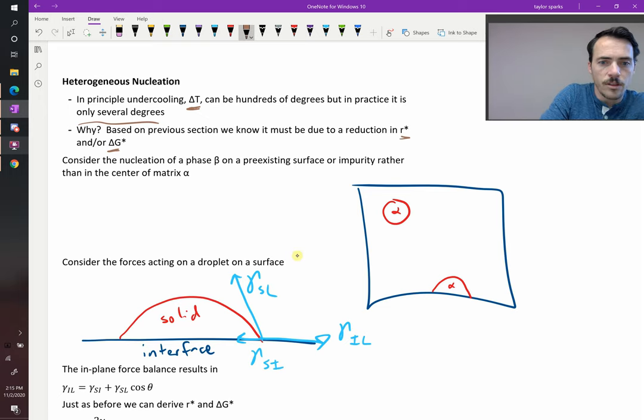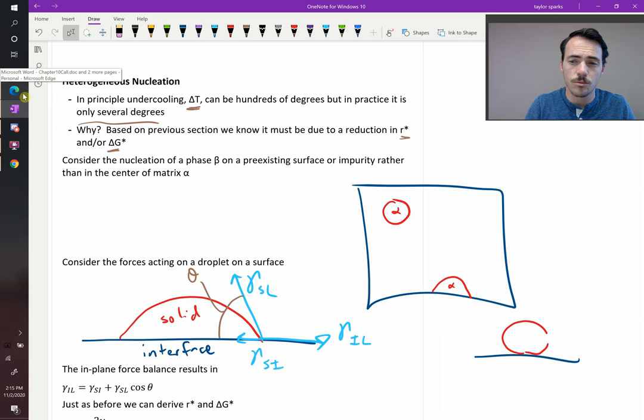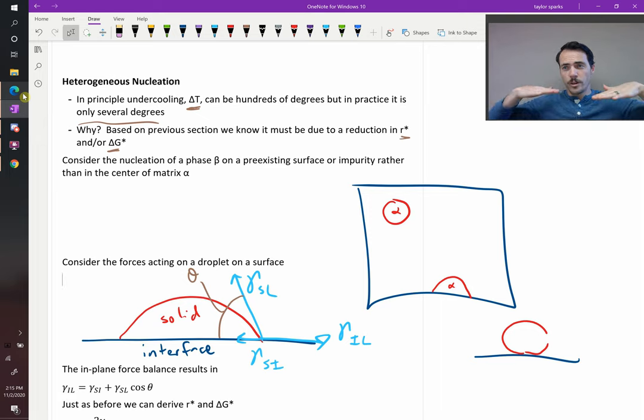So what's a contact angle? This angle right there is our contact angle. You've probably seen examples of this, like little droplets of water on Gore-Tex beat up, and they're like a perfect little sphere. So water on Gore-Tex looks like this, where the contact angle is really high. Or you have really hydrophilic materials, where the contact angle is really low, and that droplet gets spread way out.